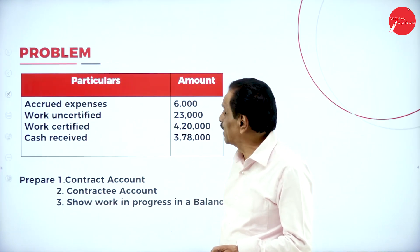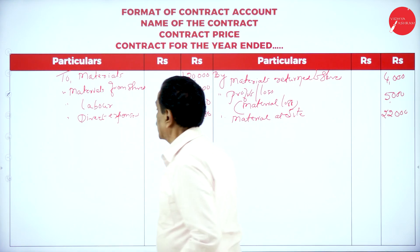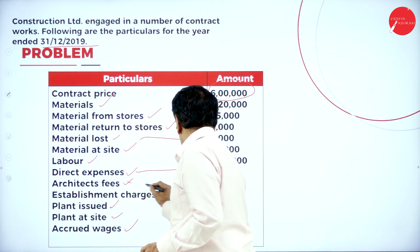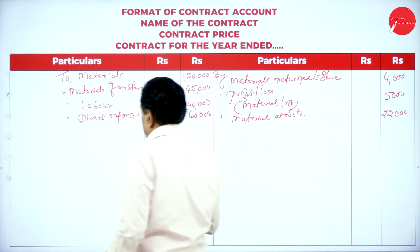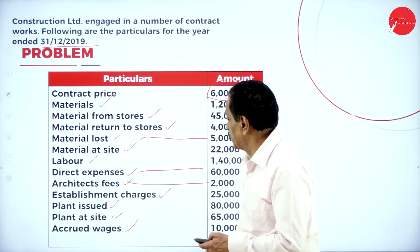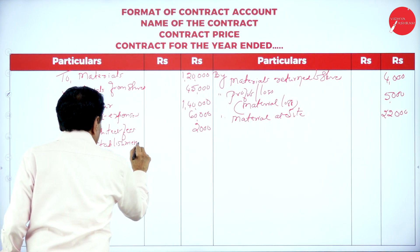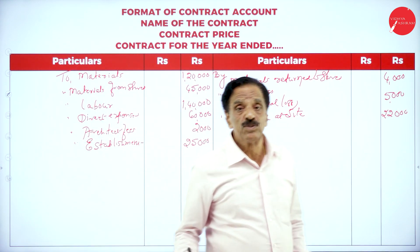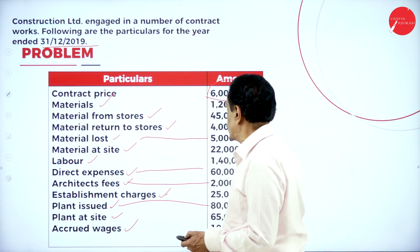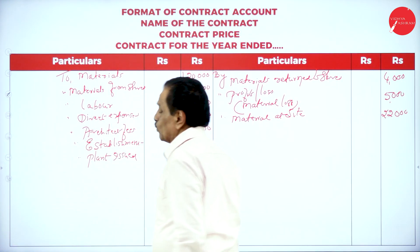Direct expenses: 60,000. Architect fees: 2,000. Establishment charges: 25,000. Plant issued: 80,000.